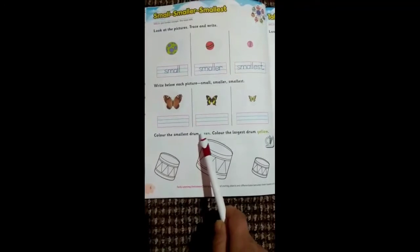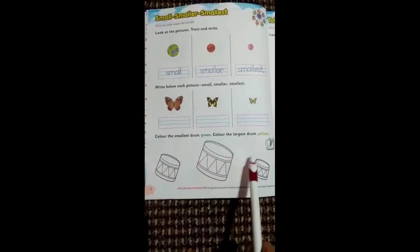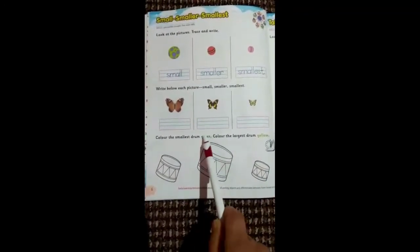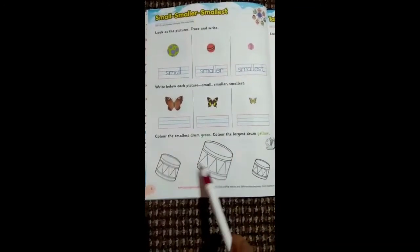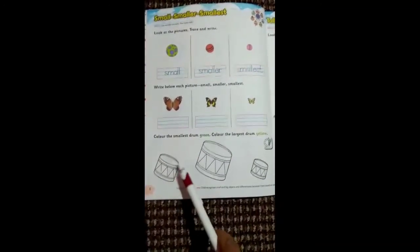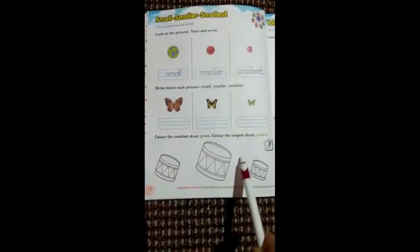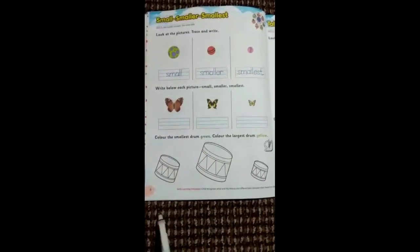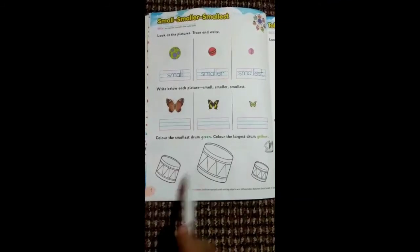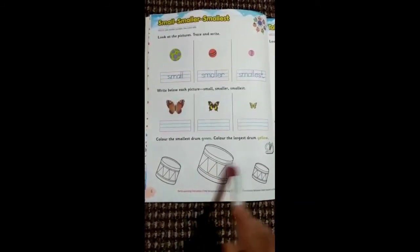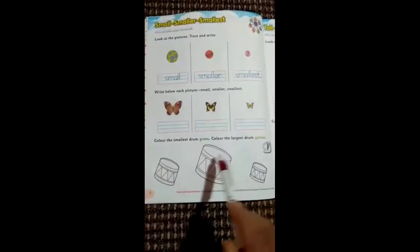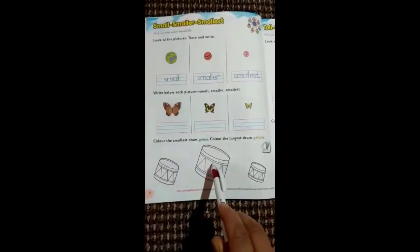You have to color the drum which is smallest among all green, and color the drum which is largest in size among all yellow. So can you compare these three drums? This is the largest one because its size is much greater than the other two drums. You have to color it with yellow color.